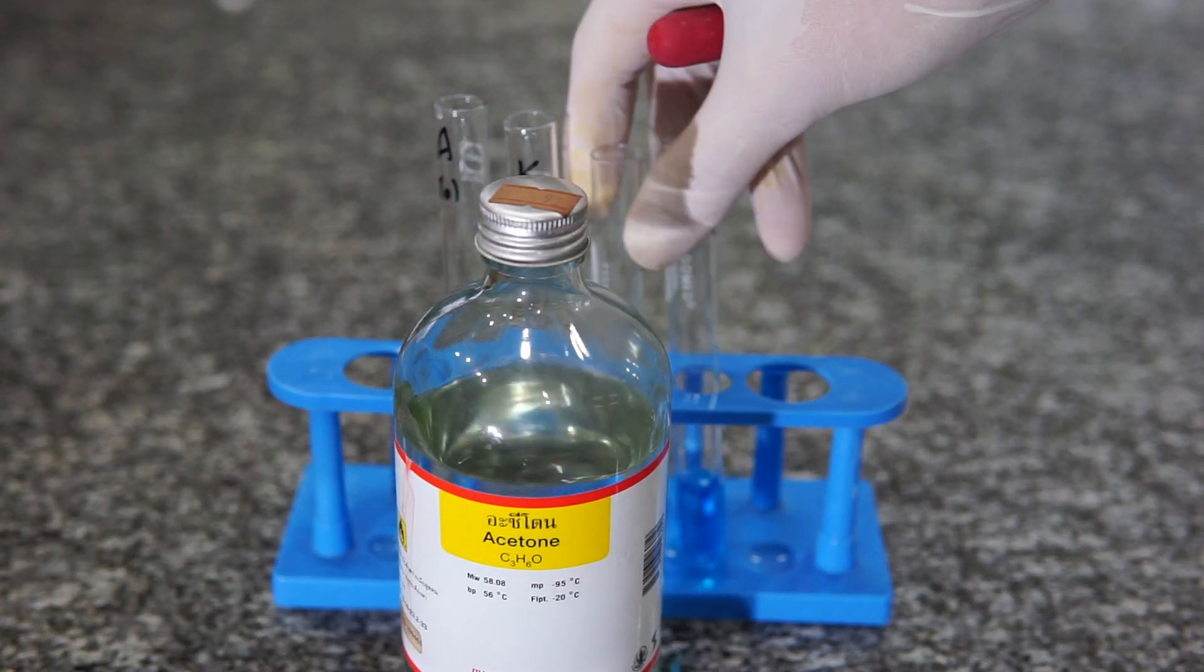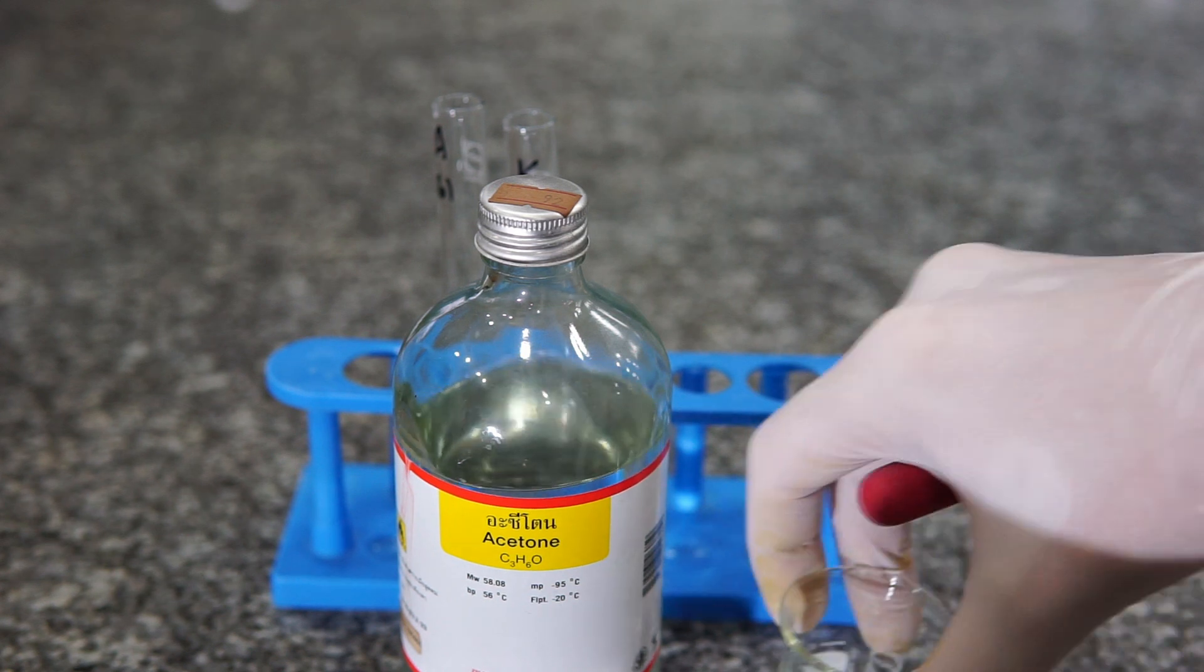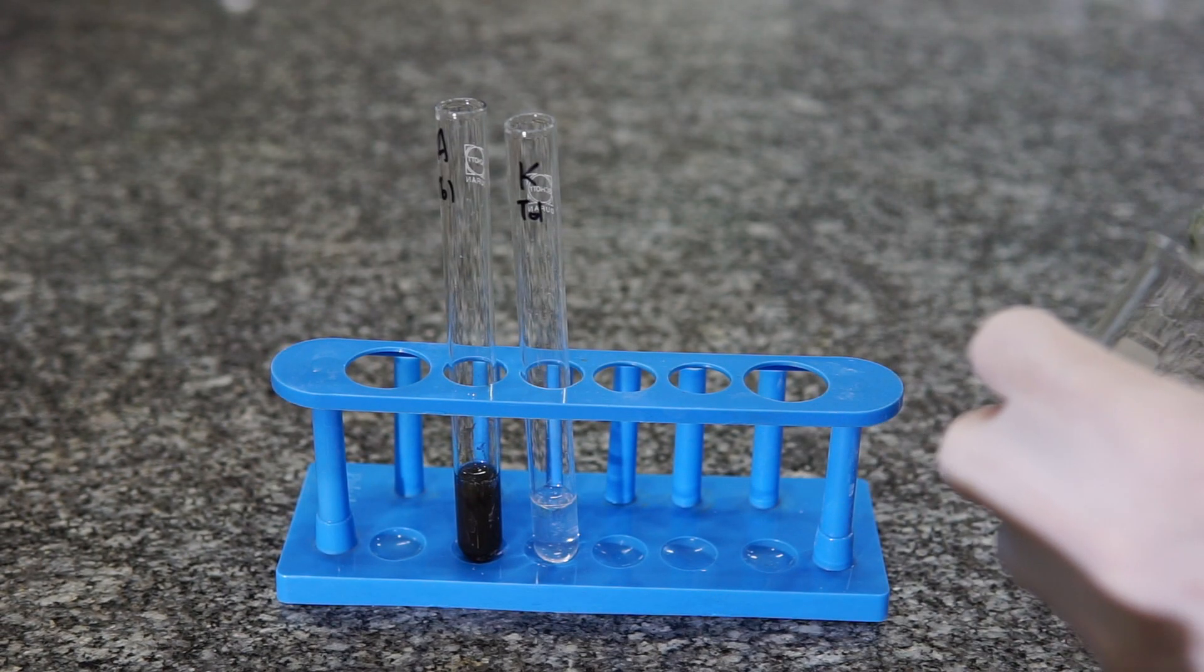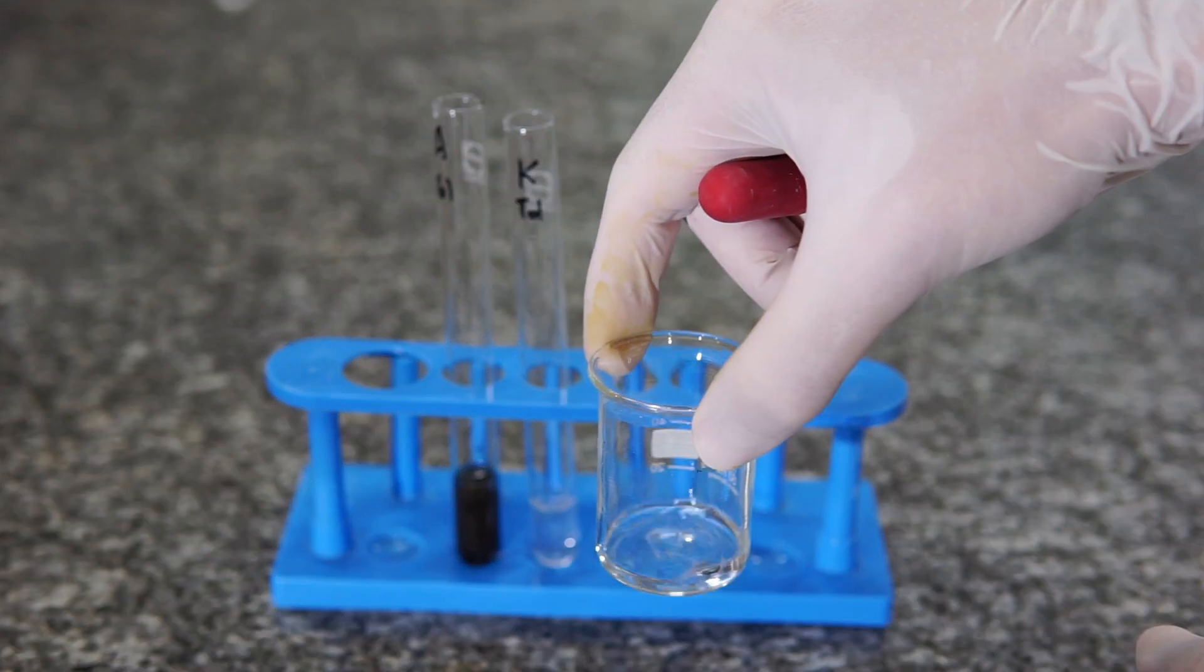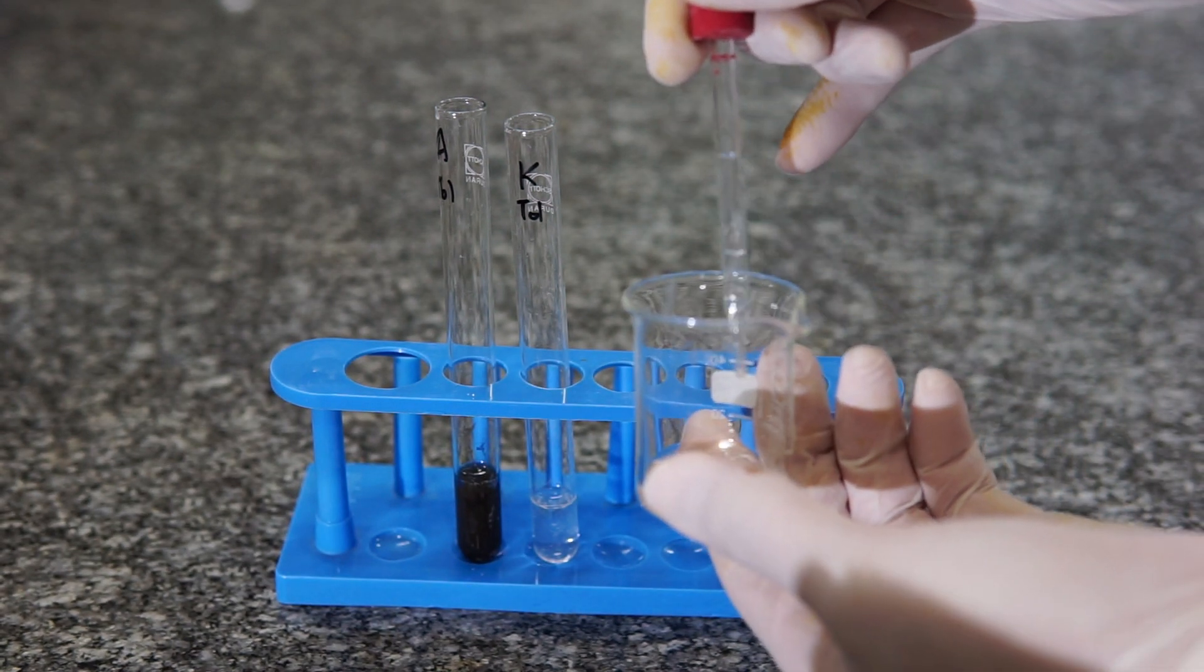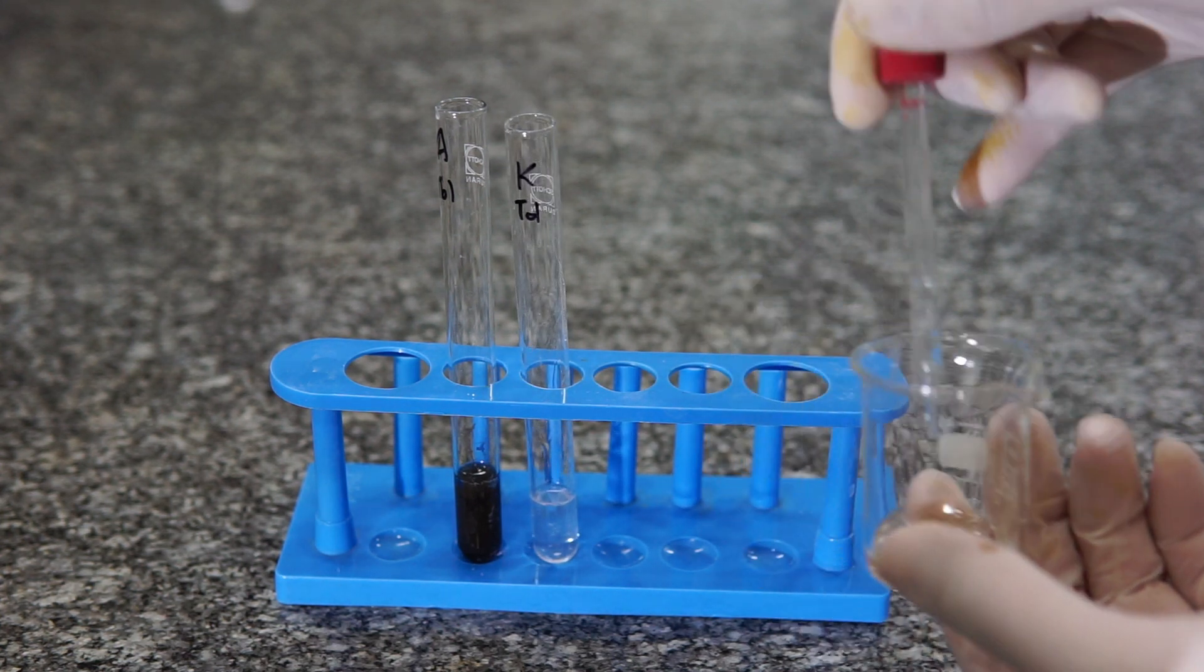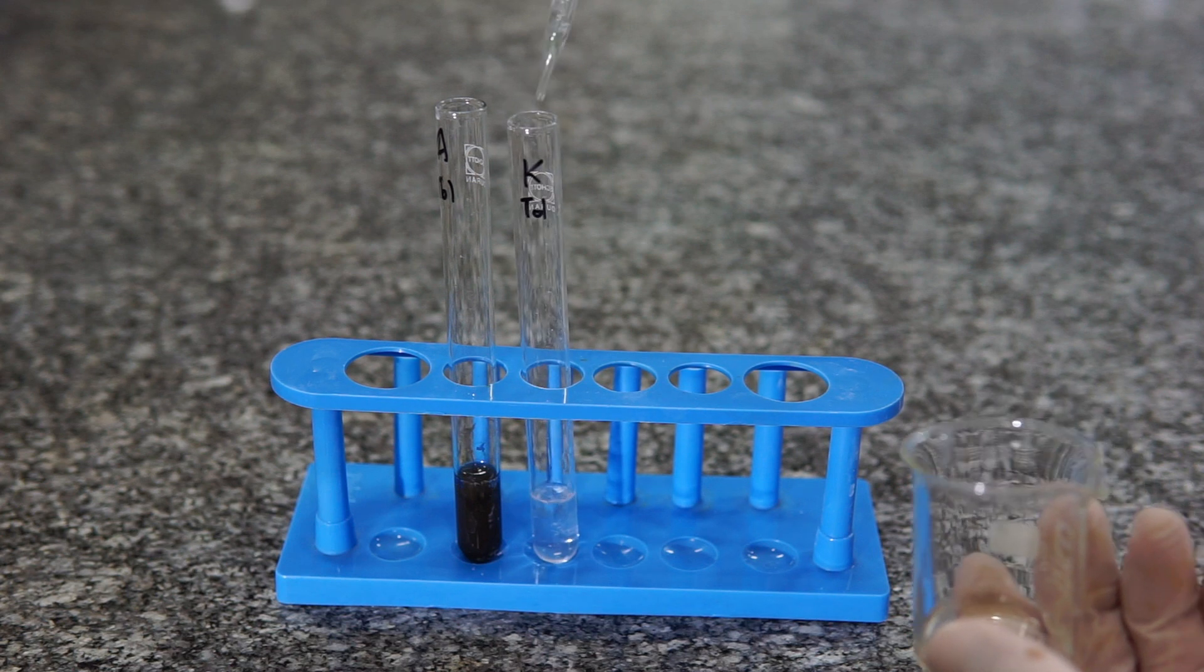That's the aldehyde. Next up we got the acetone - remember that's also called propanone. Add that to the Tollens reagent and you can see there's no obvious reaction happening, even if we add a little bit more.